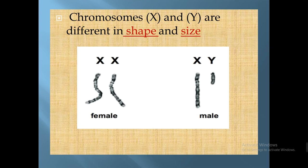Here we can see the difference between the sex chromosomes of females and males. The female has the last pair of chromosomes as homologous — similar to each other, XX — while in the male they are heterogeneous or non-homologous, different in shape and different in size.